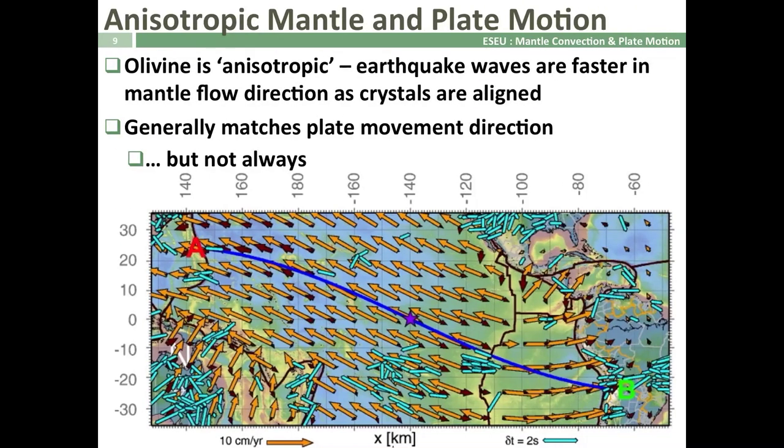Olivine within the mantle has an interesting seismic property — it's anisotropic. Seismic waves travel faster through olivine crystals in one direction than they do in others. And if convection aligns these olivine crystals, then we find fast directions and slow directions of seismic waves, and these directions can be mapped. In general, the fast direction of our olivine crystals — the pale blue lines in this diagram — match the flow directions and the movement of the plates, shown by the orange arrows. But you can see in some places, particularly around trenches, this is not always the case. So, is the mantle flow a cause of plate tectonics, or is it actually a consequence of it?